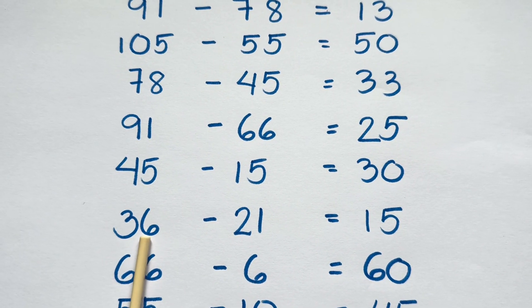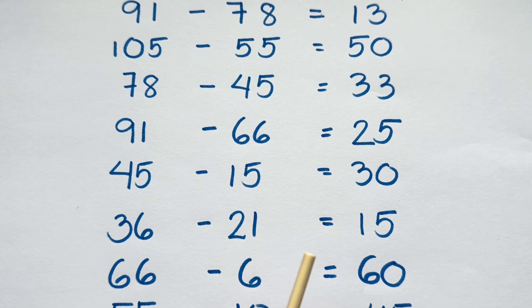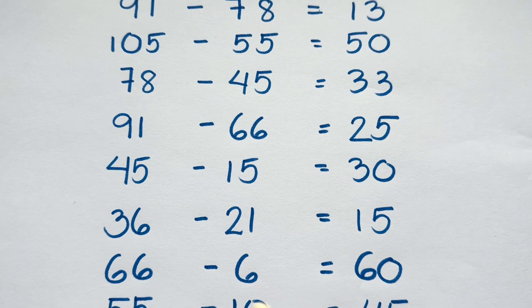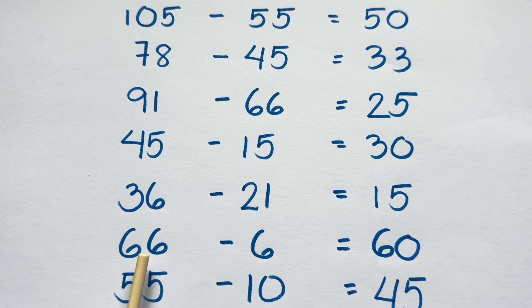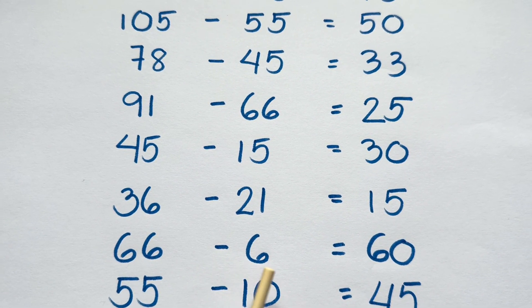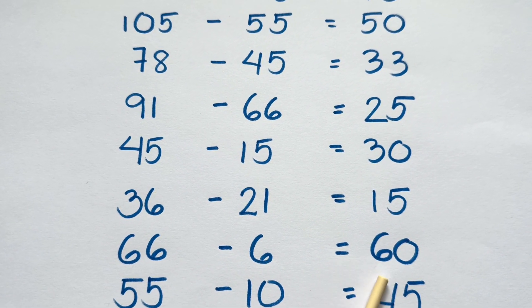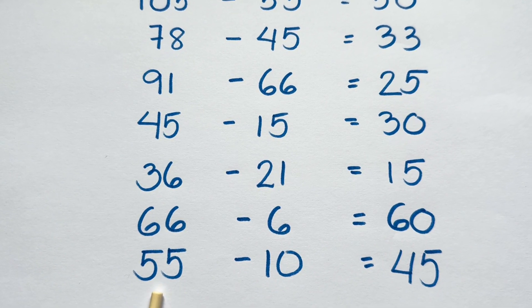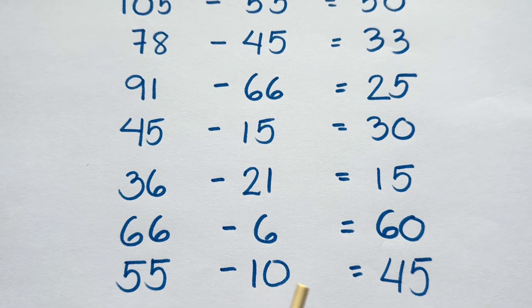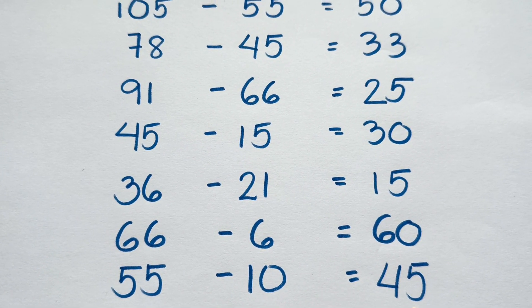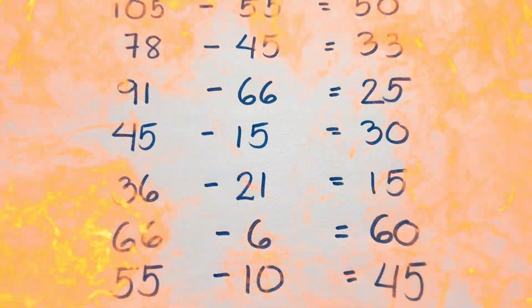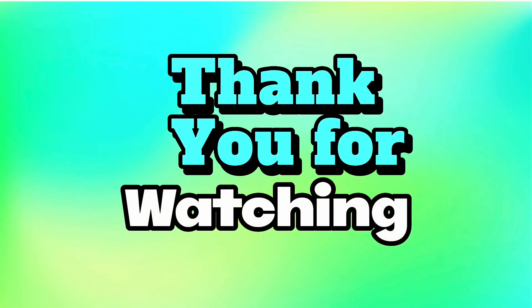Thirty-six minus twenty-one is equals to fifteen. Sixty-six minus six is equals to sixty. And lastly, fifty-five minus ten is equals to forty-five. Thank you for watching.